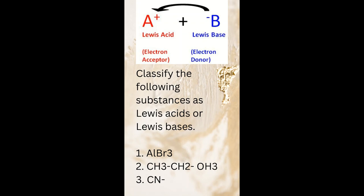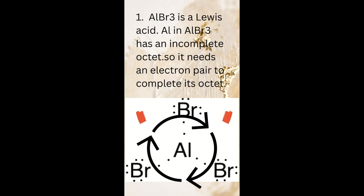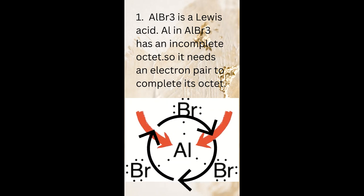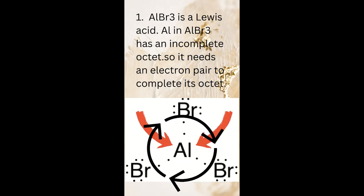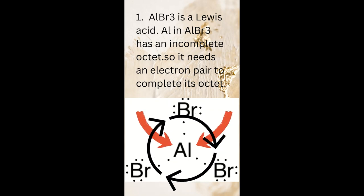Classify the following substances as Lewis acids or Lewis bases. Number one: AlBr₃ is a Lewis acid. AlBr₃ has an incomplete octet, so it needs an electron pair to complete its octet.